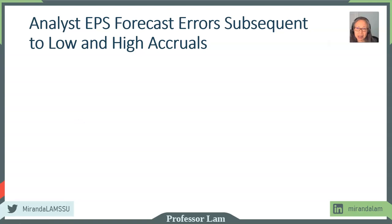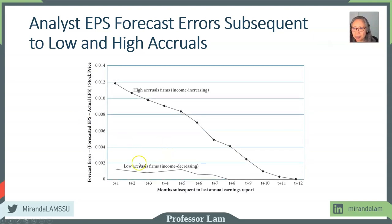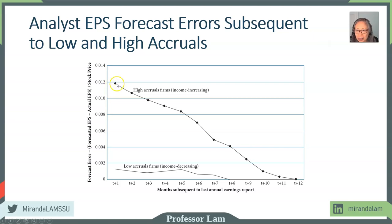We can look at how analysts evaluate these accruals and how it affects their forecasts. When firms use income-increasing accruals — high accruals — analysts tend to have higher forecast error. With low accruals, which is income-decreasing and less common, analysts tend to have lower error. This indicates analysts may be affected by management manipulation, or alternatively, analysts overestimated earnings. You could argue management is manipulating earnings to try to meet analyst expectations.